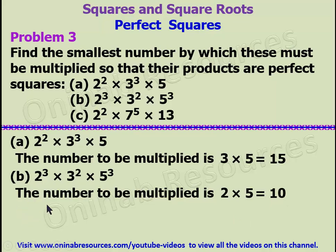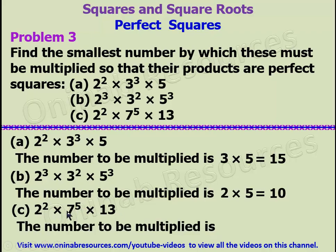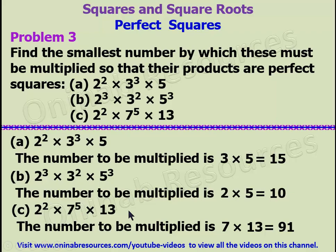For part c, we have 2 raised to the power 2, times 7 raised to the power 5, times 13. The power of 2 is even, so we don't need 2. The power of 7 is odd, so we need 7. The power of 13 is 1, which is odd, so we also need 13. Therefore, the number to be multiplied is 7 times 13, which gives 91. We need to multiply by 91 to make the product a perfect square. This is the end of Problem 3 and the end of this tutorial. I hope you enjoyed it. Until we come your way again — goodbye.